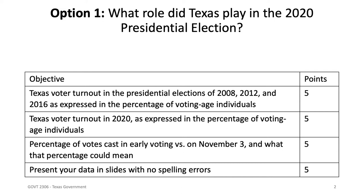Also talk about the percentage of votes cast in early voting and those who voted on election day, and what those percentages could mean. This is a weird year in 2020 because we are in the middle of a lockdown pandemic with stay-at-home orders. That may have been a driver for early voting, and you can talk about early voting as it was promoted by different candidates and things like that.